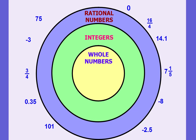So we're going to make our own Venn diagram and place examples in the correct classification. Start with one small circle in the middle of your paper, titled 'Whole Numbers.' Then draw a larger circle around it labeled 'Integers,' and then an even larger circle outside that labeled 'Rational Numbers.' Pause the video and go ahead and draw your Venn diagram.